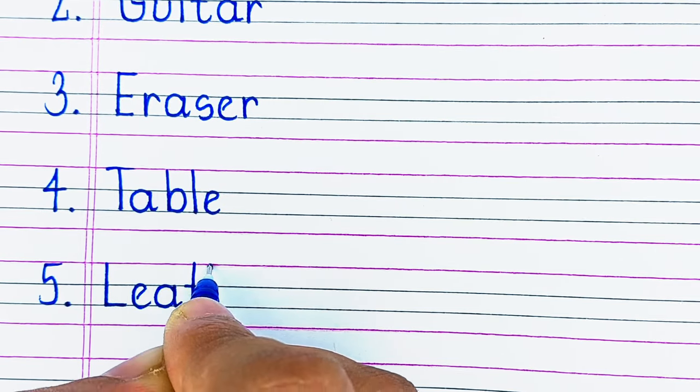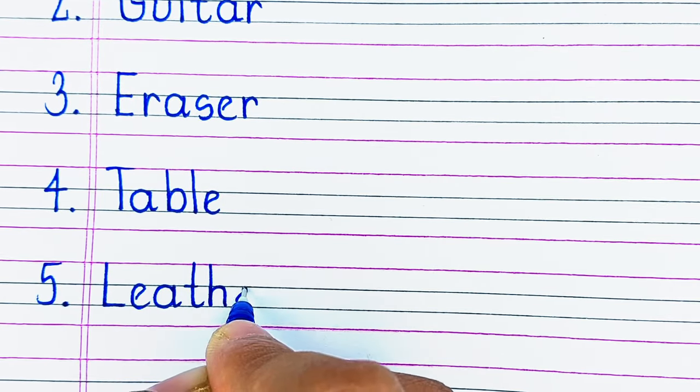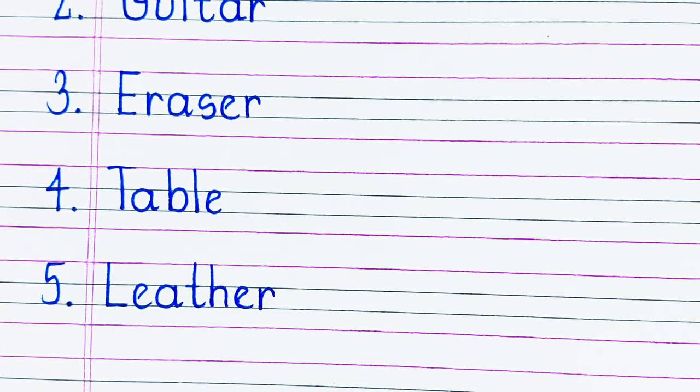Next is something that you keep your books and write on it, i.e. a table. Table is spelled as T-A-B-L-E.